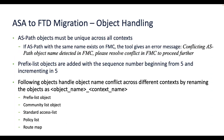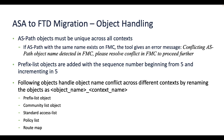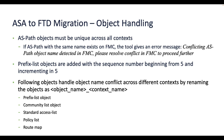AS path objects must be unique across all contexts, and if an existing object with the same name is found on FMC, the tool gives a warning message to resolve the conflict. Prefix list objects are added with a sequence number beginning from 5 and incrementing in 5, and if there is any name conflict between objects across different contexts, the defined naming convention is used to differentiate the objects. The same logic holds for community list objects, standard access lists, policy lists and route maps.